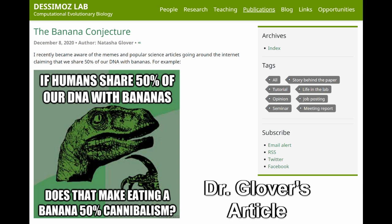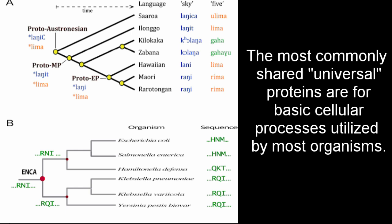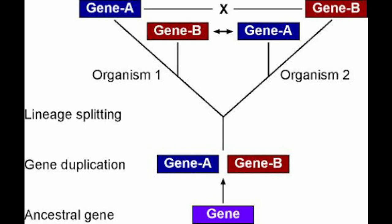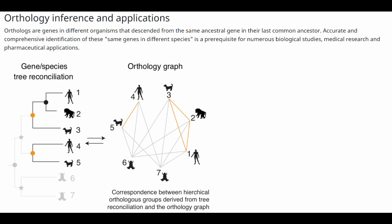Natasha Glover of Desimov Lab must have had the same question, because she decided to compare humans and bananas herself. She did some alignments using the portions of the genome that she expected to be most similar between the two species, and thus most likely to yield that 50% number. She focused on proteins, because as previously mentioned, proteins change slowly and are more likely to be conserved. In order to compare all the proteins in one species to all the proteins in another species and see which ones match, Natasha decided to use orthologs. Orthologs are the term used for genes in different species that started diverging due to a speciation event — a corresponding gene between species. Desimov Labs maintains an orthologous matrix, which is a method and database for finding orthologs between many different species, making Natasha the perfect candidate to determine whether or not humans and bananas truly are 50% identical.